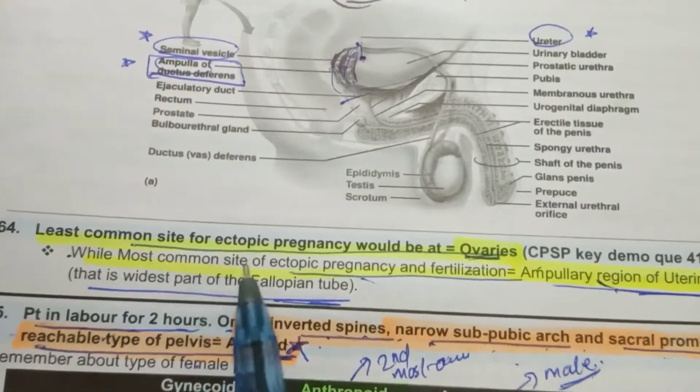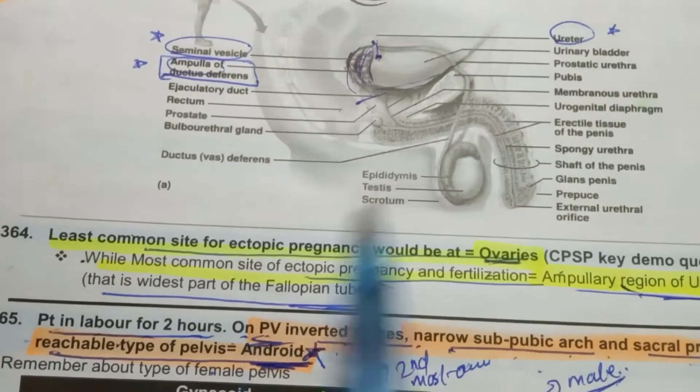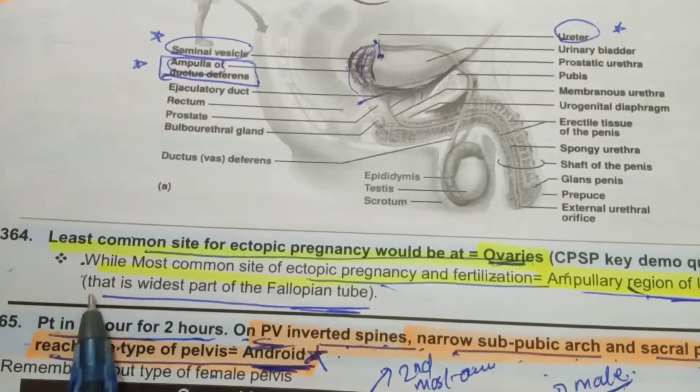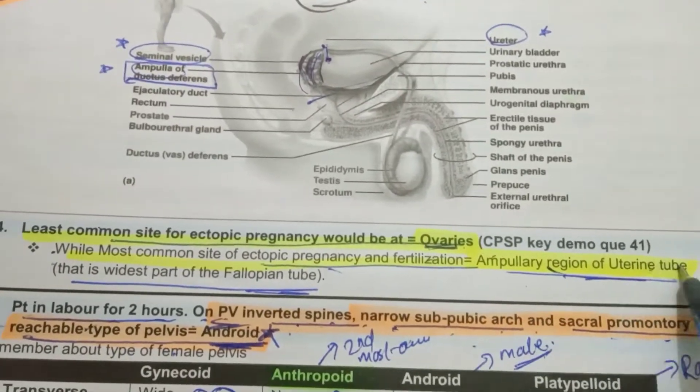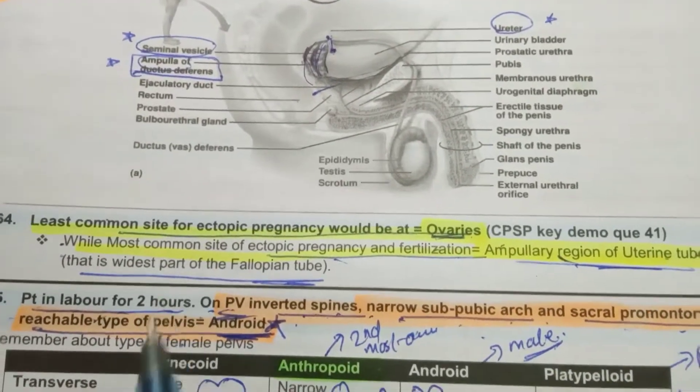The most common site for ectopic pregnancy: least common site would be ovaries and most common is fallopian tubes. Most common site for pregnancy and fertilization is ampullary region of fallopian tubes, which is the widest part of fallopian tubes.